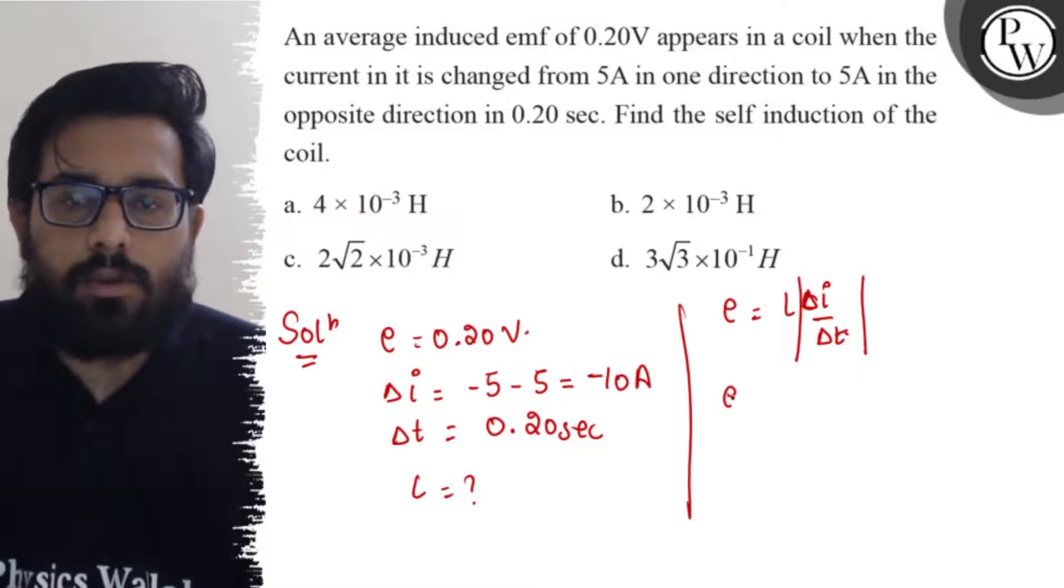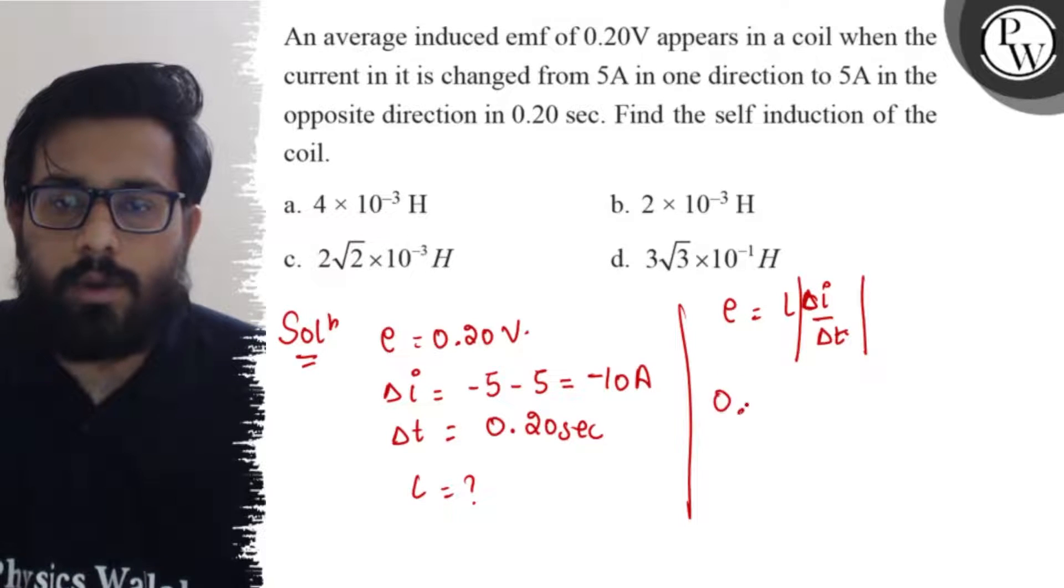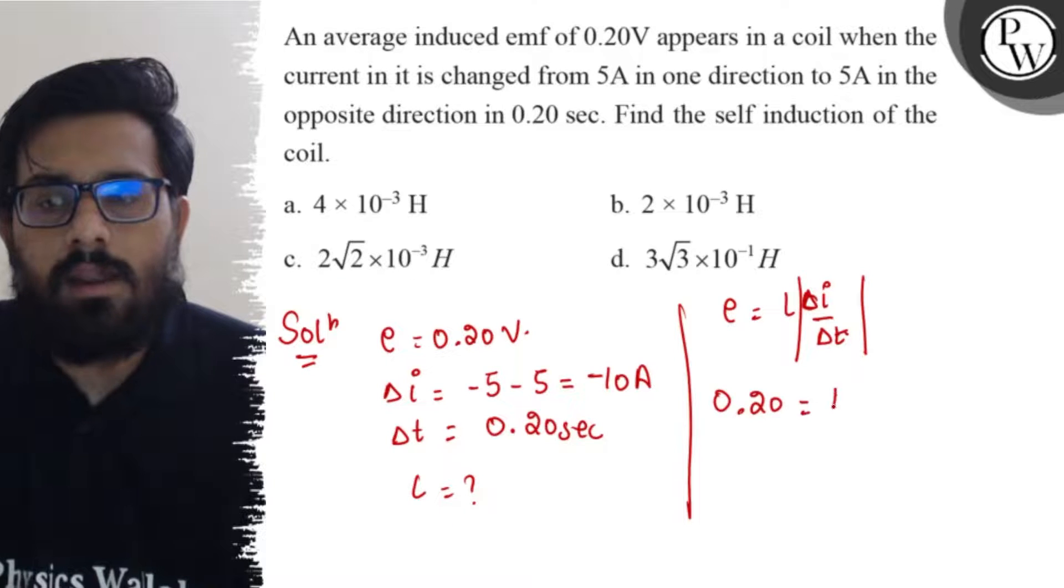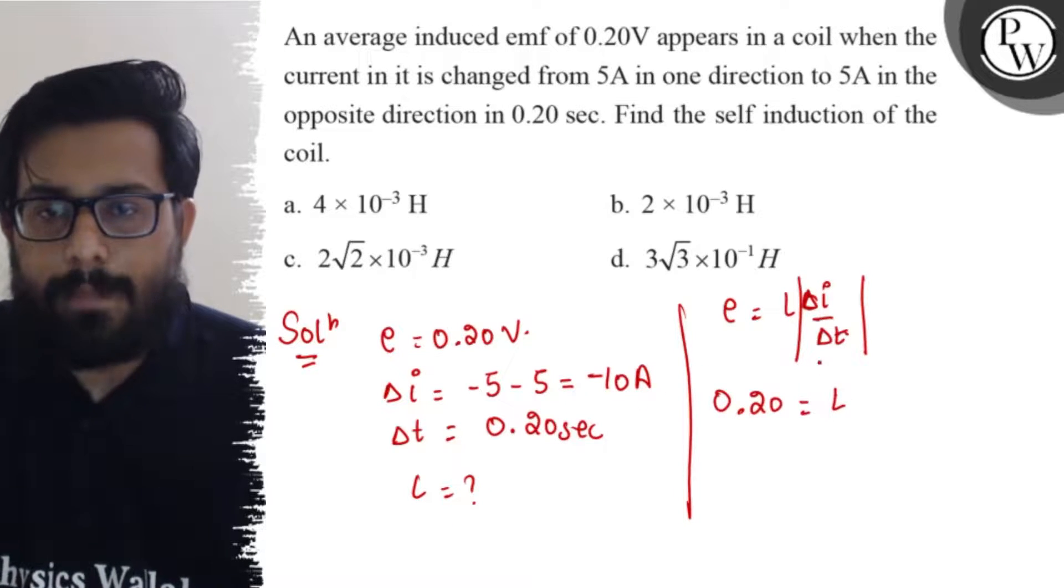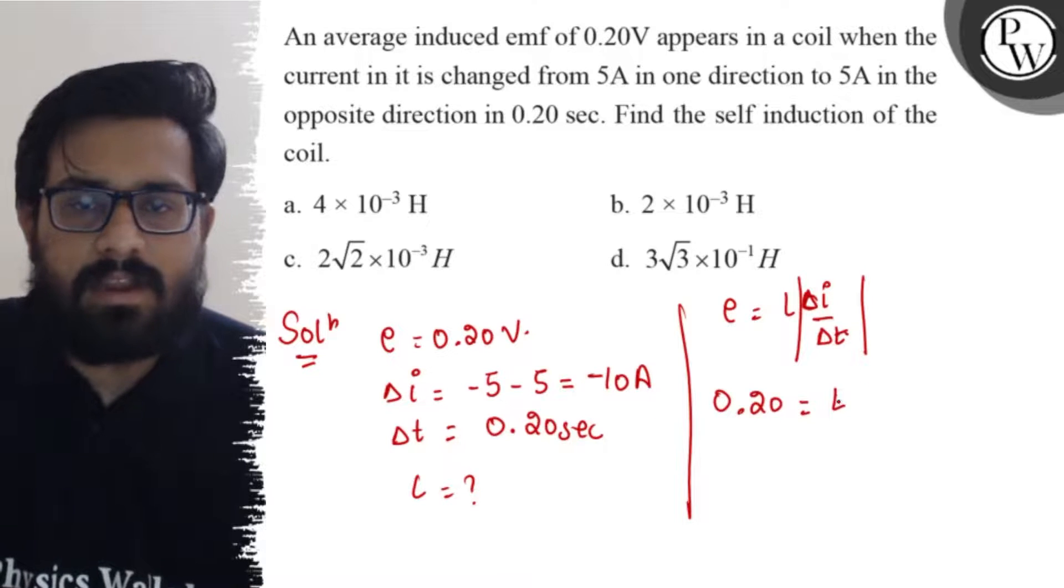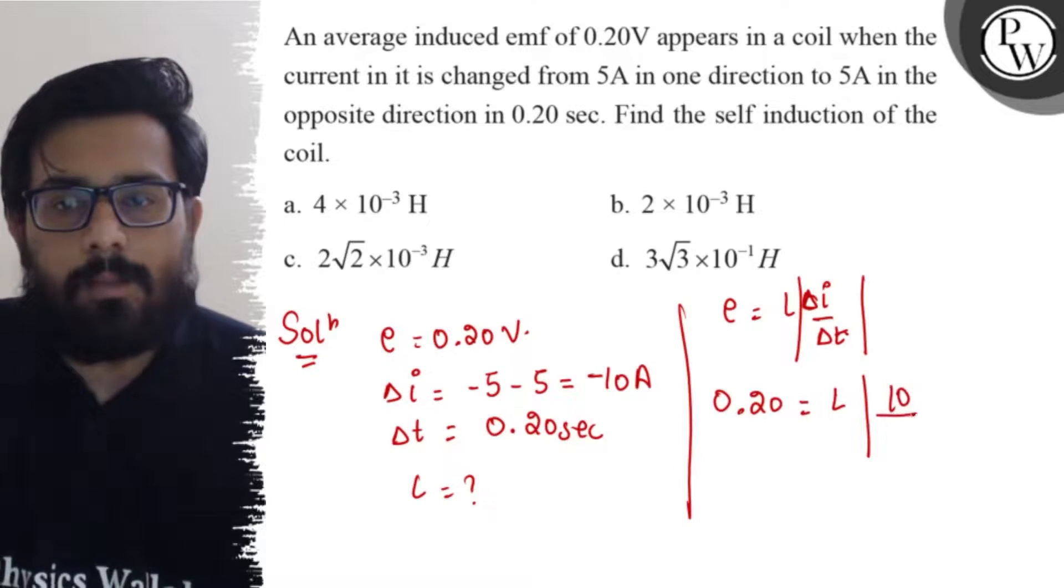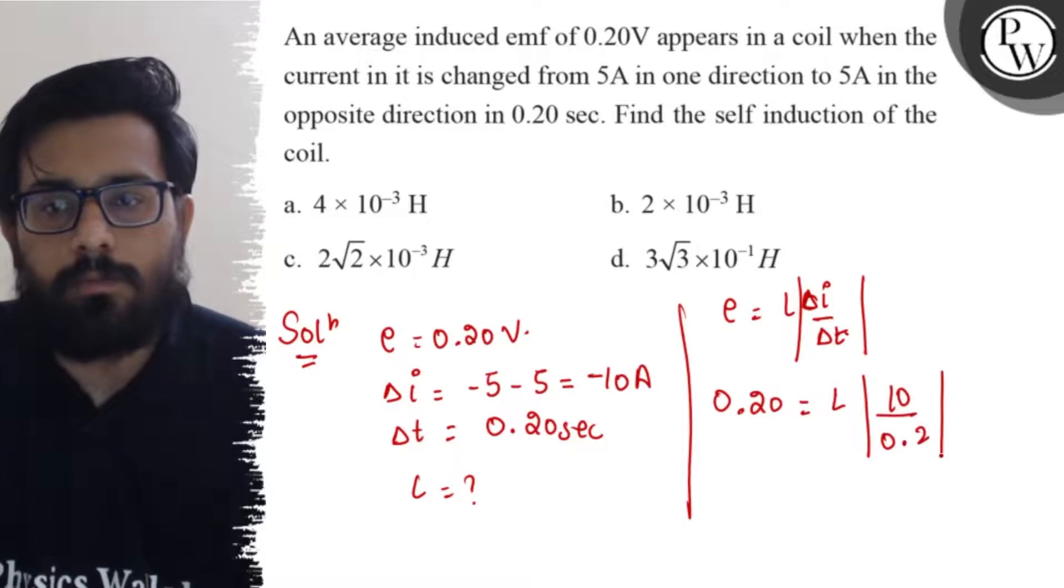So E is 0.20. Putting the values, 0.20 equals L. We are just considering the magnitude, so 10 upon 0.2.